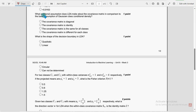Now let's get back to the solutions. Sixth question. What additional assumption does LDA make about the covariance matrix in comparison to the basic discriminant analysis? For sixth question, option 3, the covariance matrix is the same for all classes.